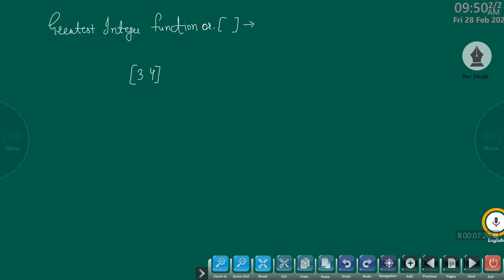If you see any integer in the square bracket, read it as greatest integer function. Clear? Now, if I have to find the value of greatest integer of 3.4, what does it mean? It means that up to 3.4, what is the greatest integer? 3. So the value of [3.4] is 3.